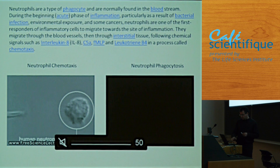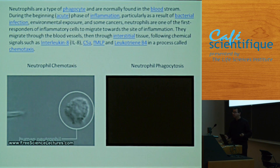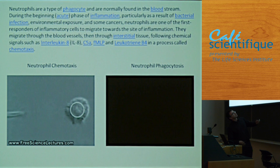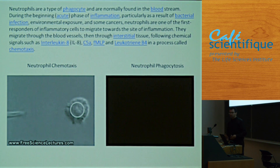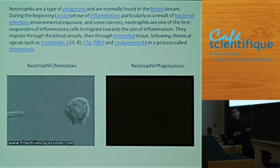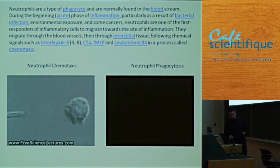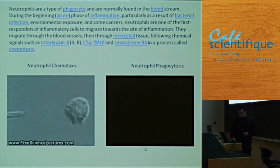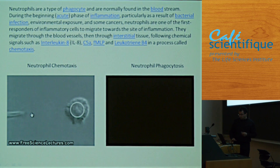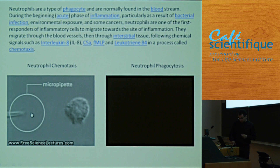So this is a neutrophil. Neutrophils are cells in the immune system. They're in the bloodstream, recruited as cells of inflammation and infection. And they are very good at migrating towards particular stimuli.